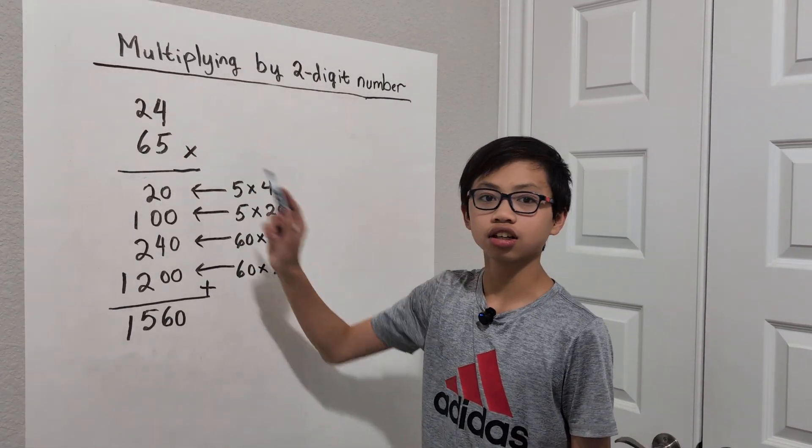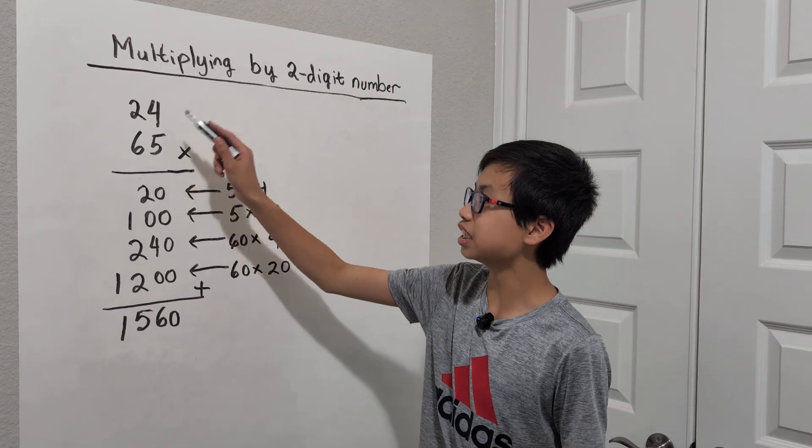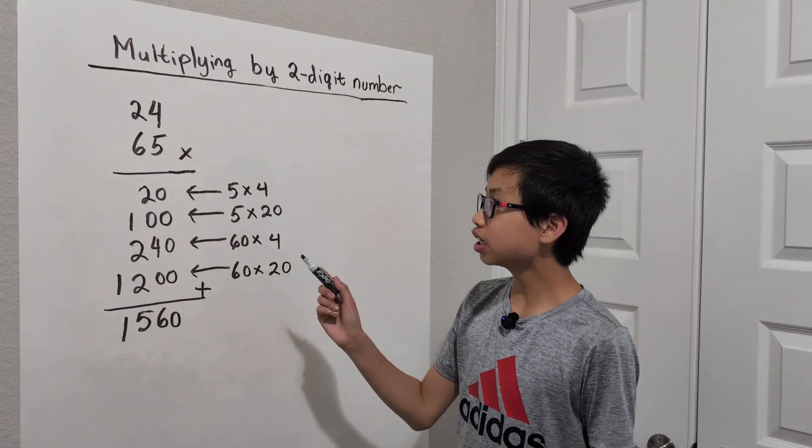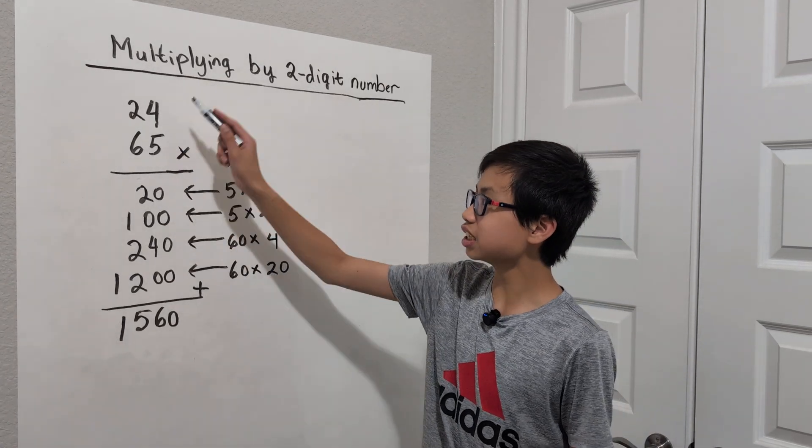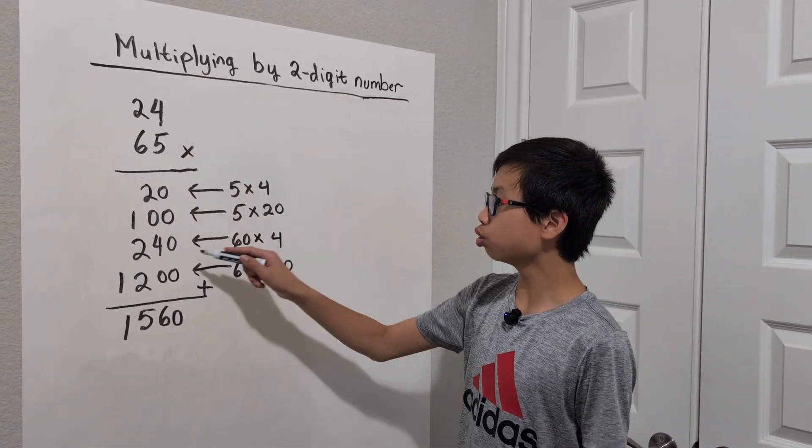Now we're going to go to the 6 here, which we're actually going to do is 60 times 4. Why again? Because, 6 is in the tens place. So we're going to do 60 times 4 is equal to 240.